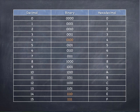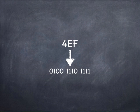4EF. Well, F is all ones. E is 1, 1, 0. And, 4 is 0, 1, 0, 0. 4EF is 0, 1, 0, 0, 1, 1, 1, 0, 1, 1, 1, 1. Amazing.